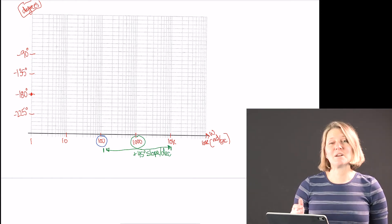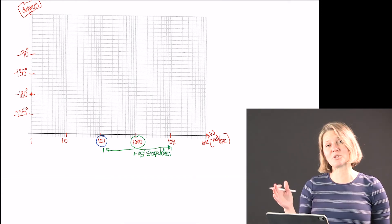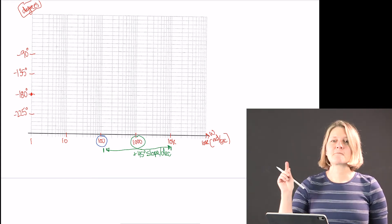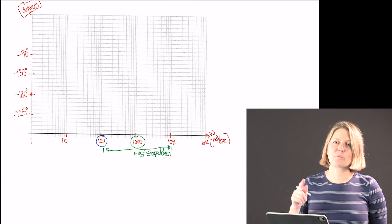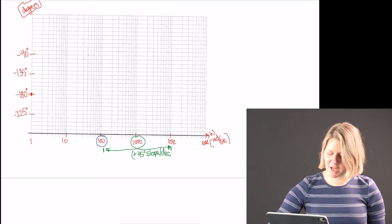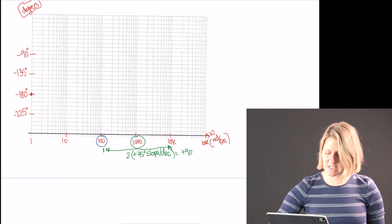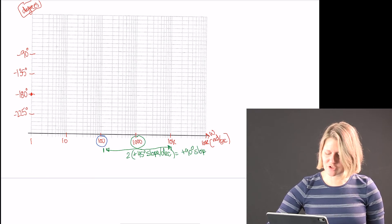45 degrees per decade, 45 degrees slope per decade for each zero. And we have two of them. So we multiply that by 2 to give us an effective 90 degree slope per decade change during that region.